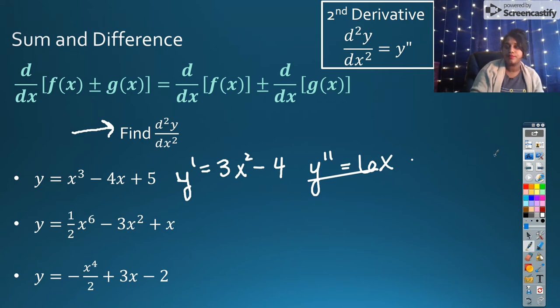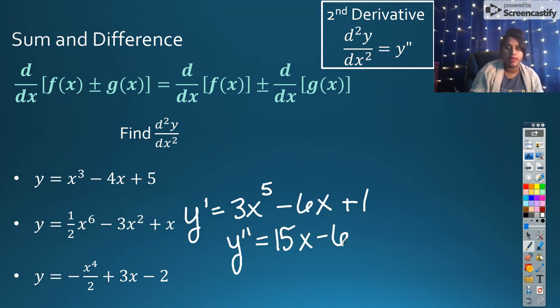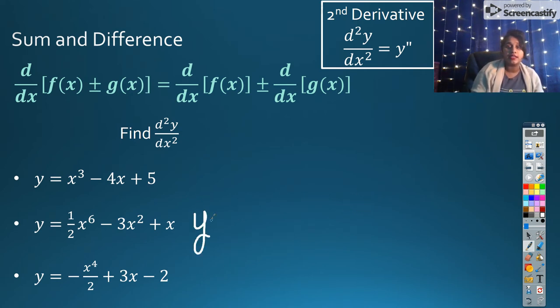We have our second example, and we have y prime would be equal to 6 times one half, so 3x to the fifth minus 6x, and then plus one. So then its derivative, or the second derivative, becomes 15x to the fourth minus 6, and technically plus zero. And our final example tells me we have four times negative one half, so negative 2x to the third plus 3, and then plus zero. So the derivative of that becomes negative 6x squared.